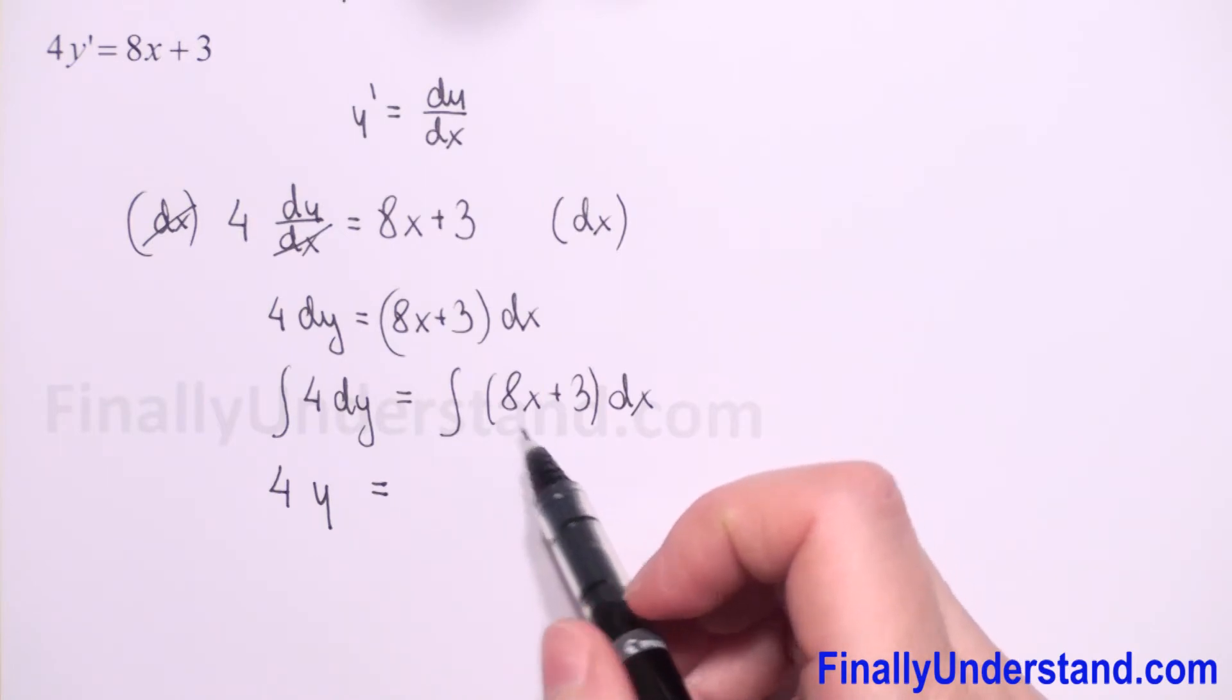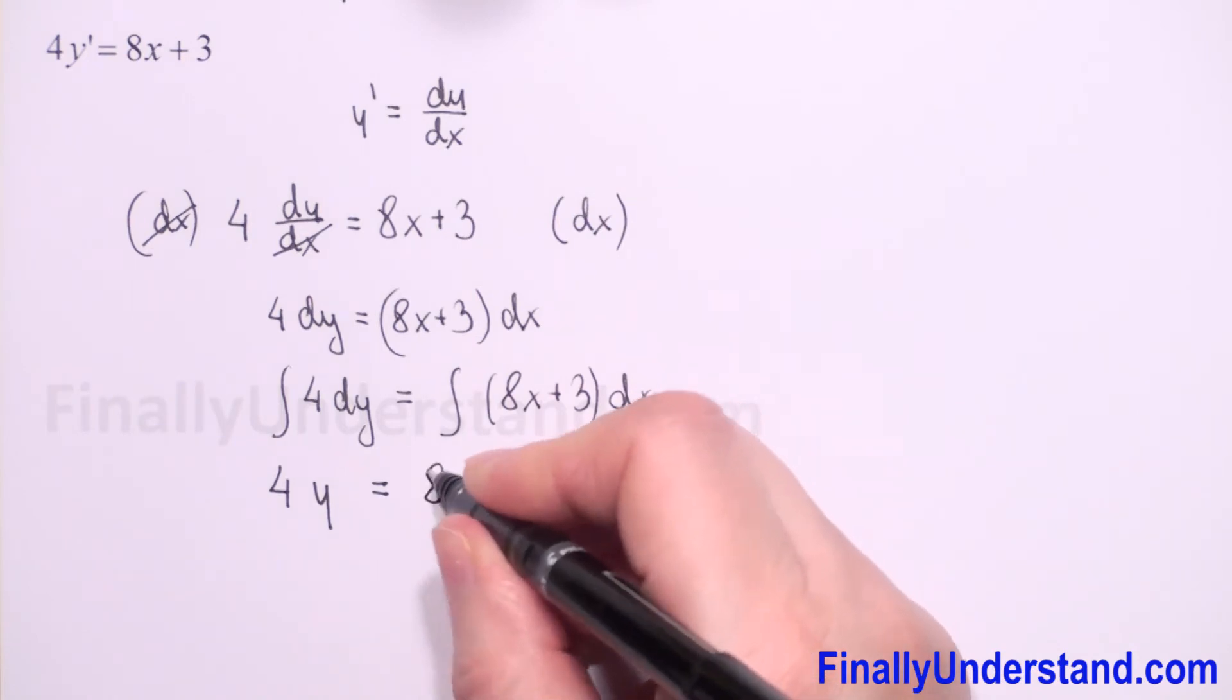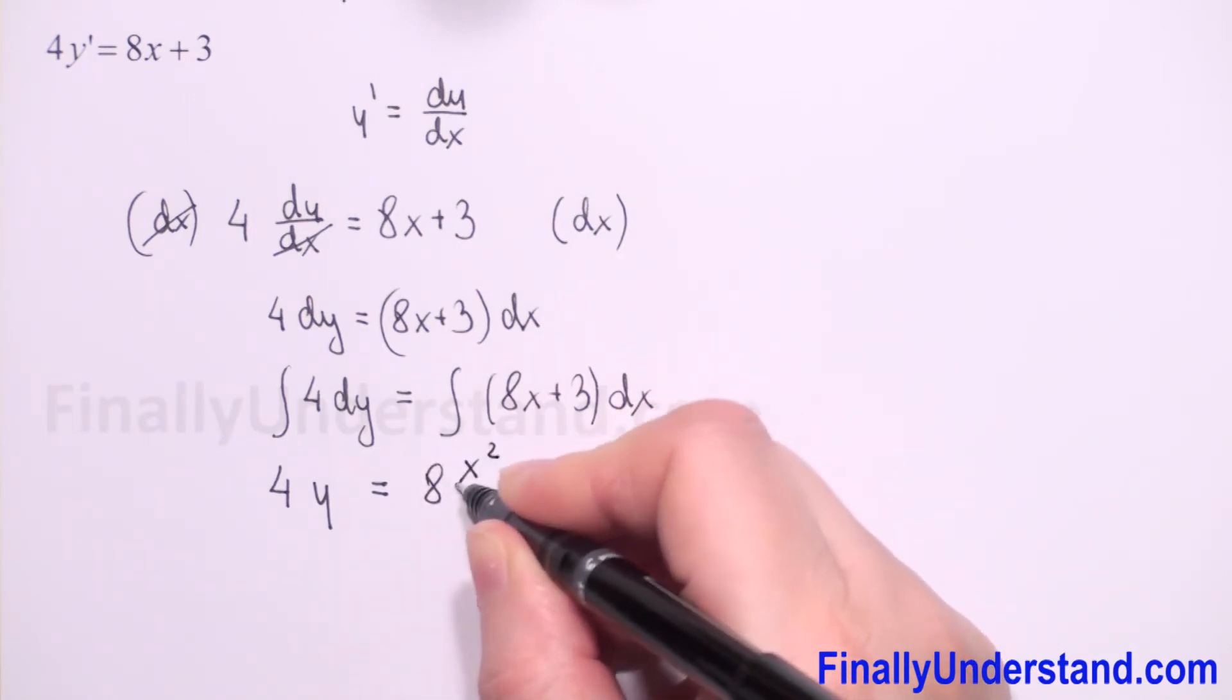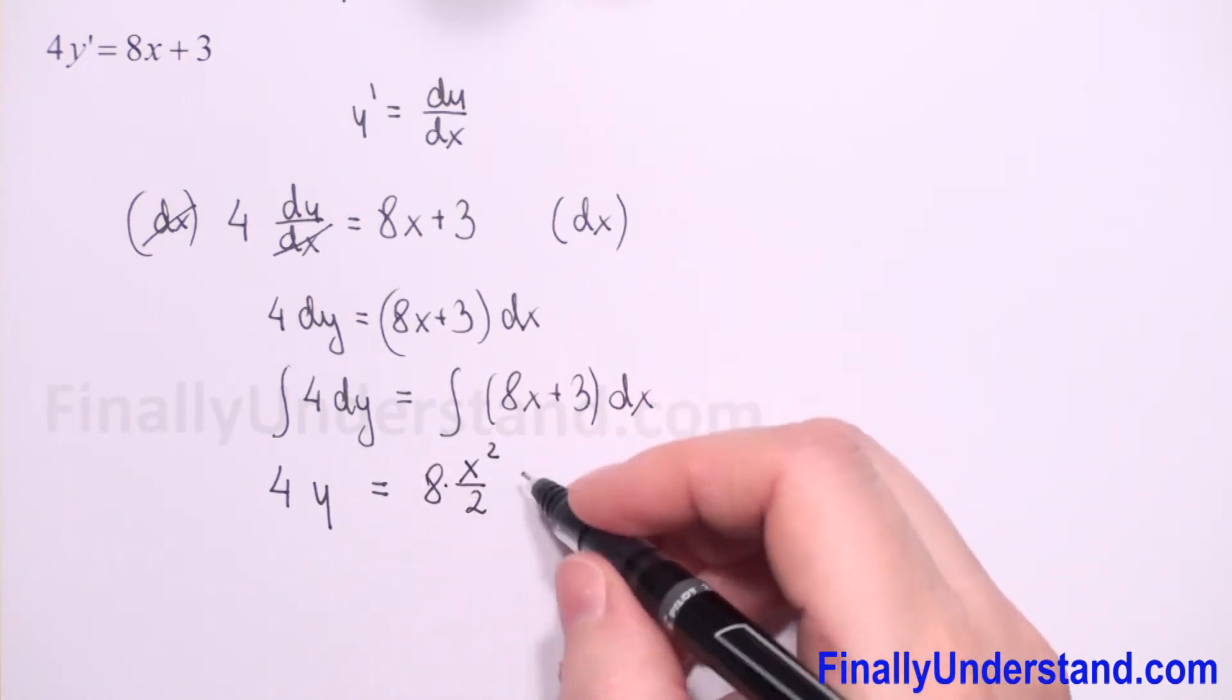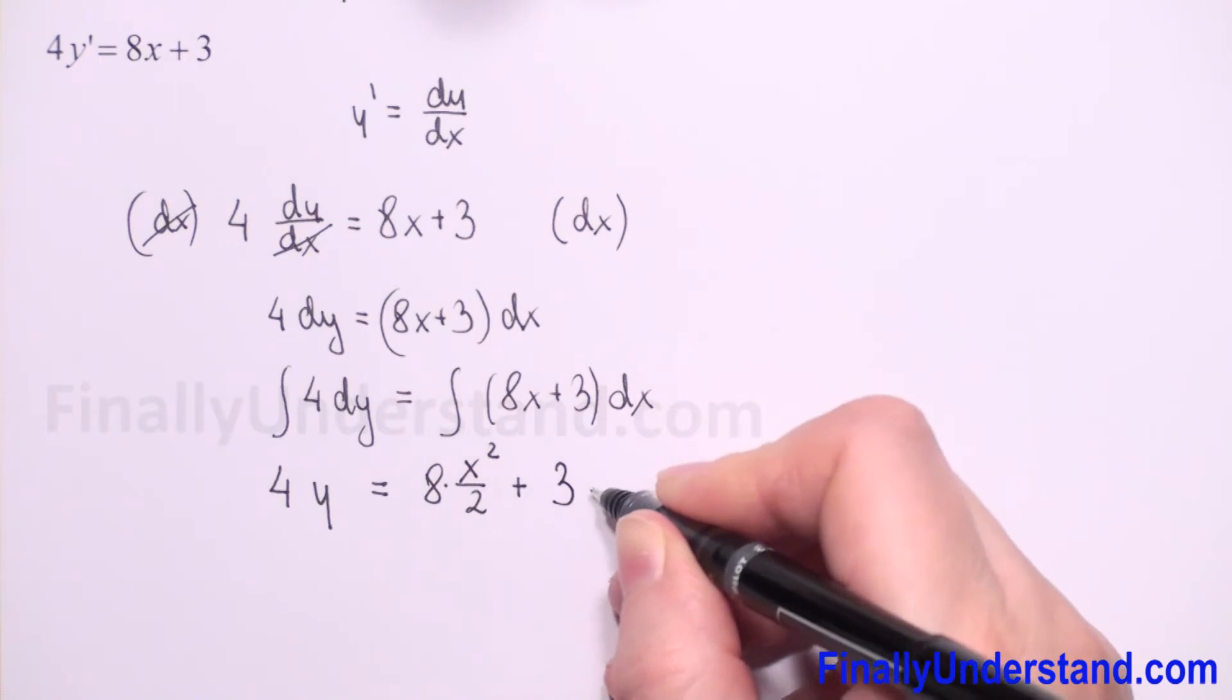And this is equal to the integral of a sum, which is the sum of integrals. The integral of 8x with respect to x is 8 times x squared over 2, plus the integral of 3 dx is 3x.